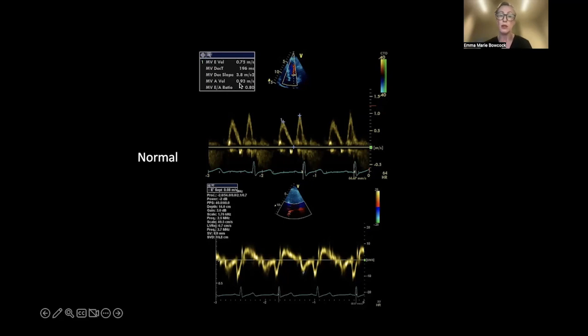You can see that comes to 0.75 meters per second, and this is our A-wave which is 0.93 meters per second. The ratio of those two things gives us an E/A ratio of 0.8, which would be in the normal range.